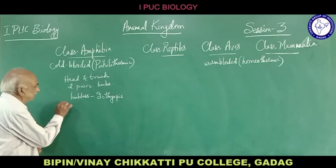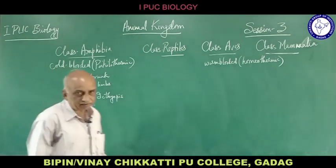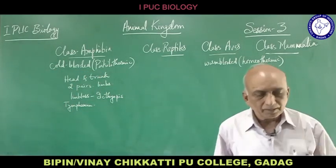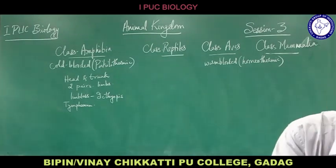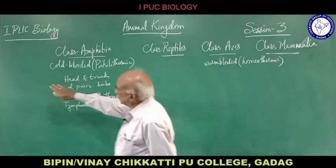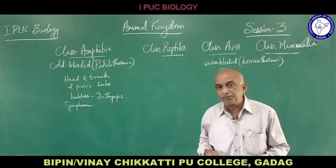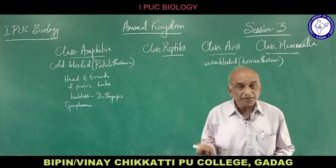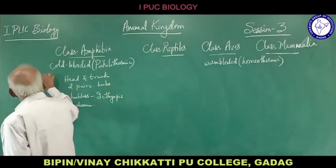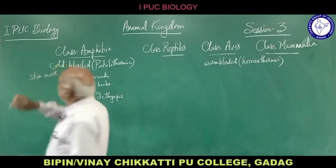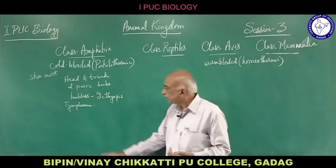There is a structure called the tympanum, which acts as the ear. Scales are absent in amphibians, whereas they are present in bony and cartilaginous fishes. The skin is always moist, which helps in respiration. Respiration takes place through gills, lungs and skin.